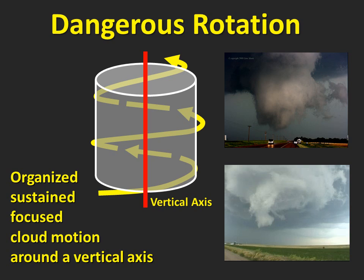Clouds are always moving in and around thunderstorms, and spotters can use that cloud motion to help them know what's going on with the storm. Most of the time, moving clouds aren't anything to be concerned about, but when the clouds are rotating, it can be important. Rotation is defined as organized, sustained, focused cloud motion around a vertical axis.